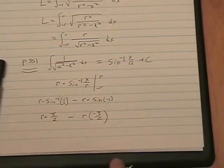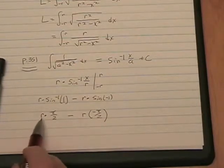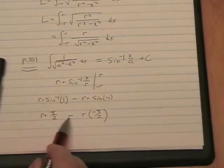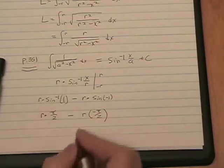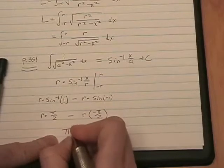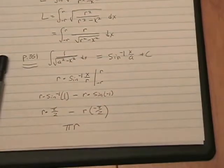And so, here's the punchline. r times pi over 2 minus r times negative pi over 2 turns out to be r times pi, or pi r, which is what we were looking for.